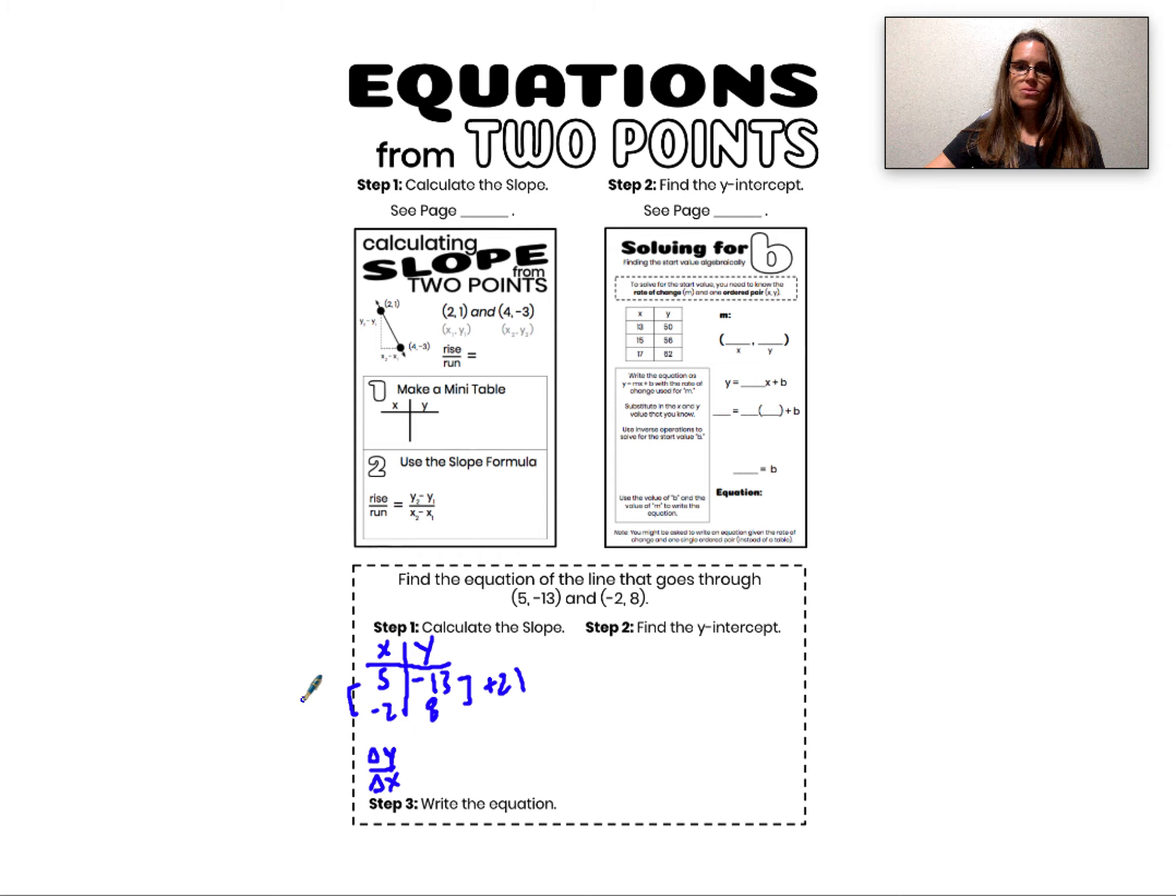To go from 5 to -2, I'm going down 7. Minus 5 to get to 0 and then minus 2 more. Negative 7. Therefore, my slope is change in y divided by change in x. 21 over -7, which is just -3.